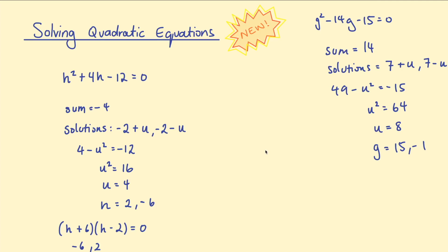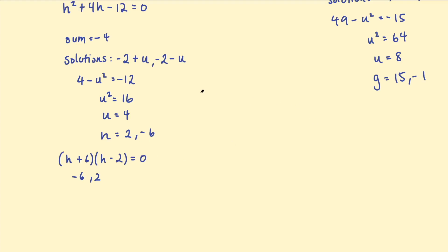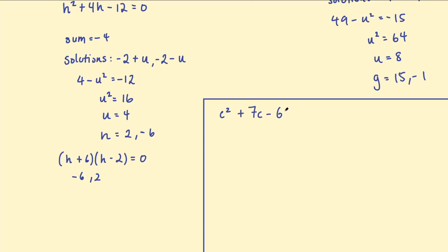Now let's do one more example where the coefficient is not an even number, so we'll get a fraction — but you'll see it still works out. We have c² + 7c - 60 = 0. The sum is the negative of the coefficient of c: negative 7. The solutions are half of this: negative 7/2 plus u, and negative 7/2 take u. You could use decimals but I'll leave it as a fraction.